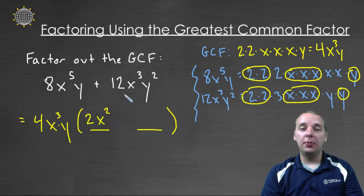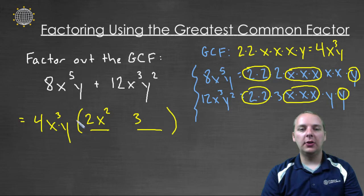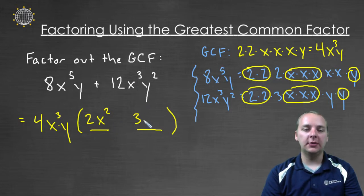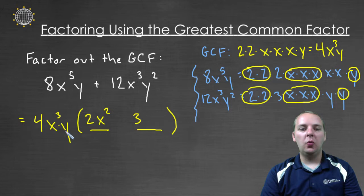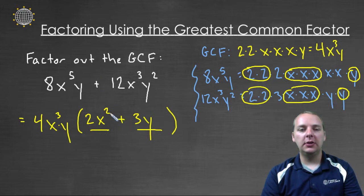We play the same game for the second term. Four times what gives me twelve — that's four times three. X to the third times what gives me x to the third — that's times one. And y times what gives me y squared — well y times y gives me y squared.